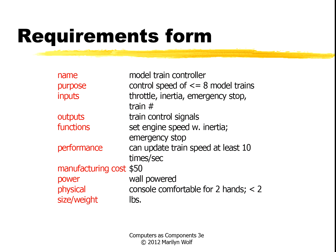Here is our requirements form in the standard format that we use. We're calling this a model train controller. We want to have it control eight model trains. We want to have throttle, inertia, emergency stop, and train number as inputs. The outputs are the signals we need to control the train — we want to set engine speed with inertia and emergency stop. We want to update the train speed at least ten times a second. Manufacturing cost is fifty dollars — that's a guess. It plugs into the wall, not battery powered. The console should be two-hand comfortable and less than two pounds.